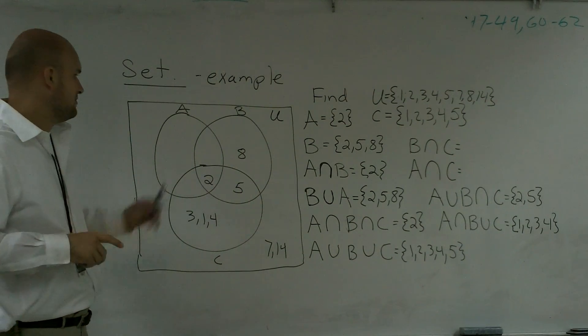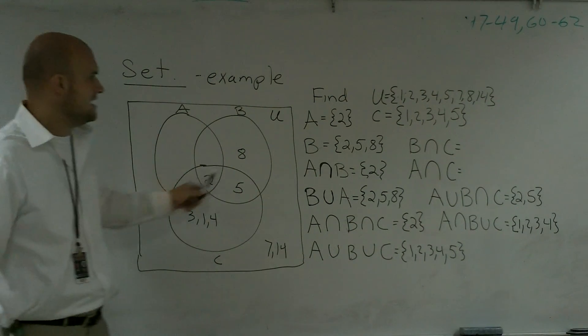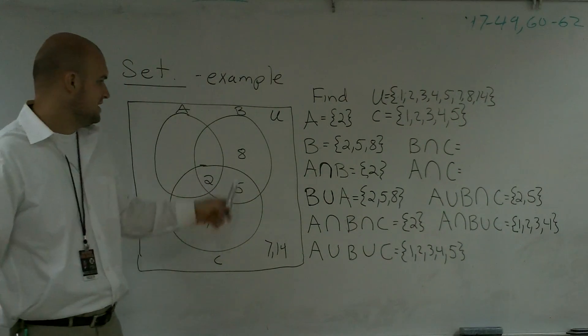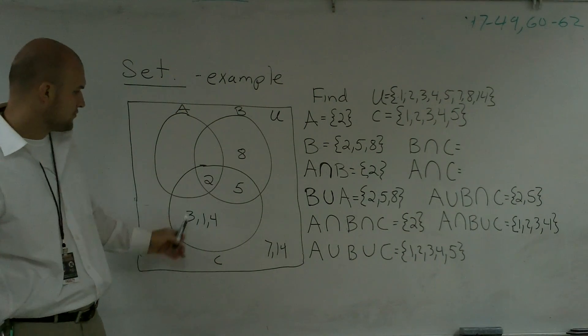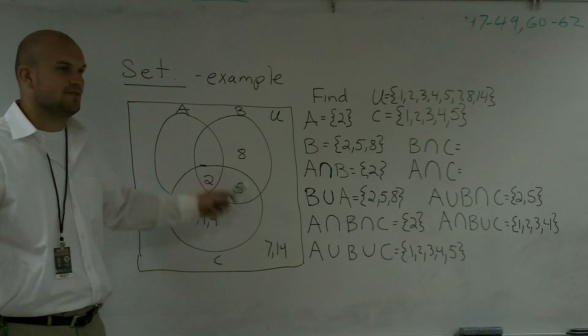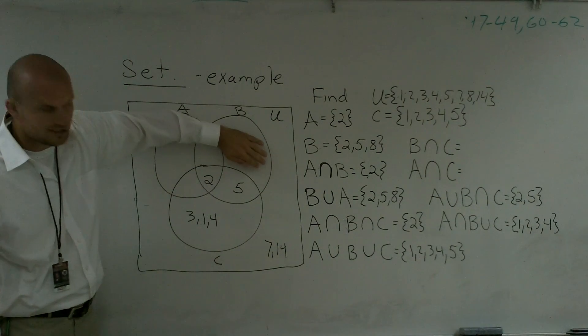Then for each subset we have labeled. The only numbers in A are 2. The only numbers in B are 2, 5, and 8. And then C, we have 3, 1, 4, 2, and 5. Those are all within the circle of C.